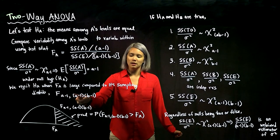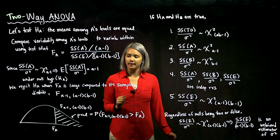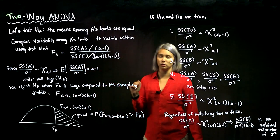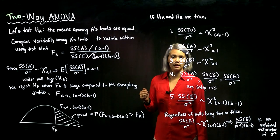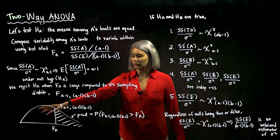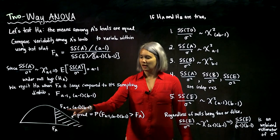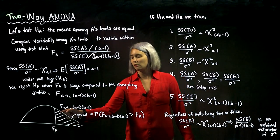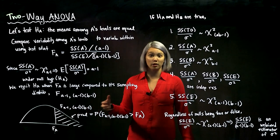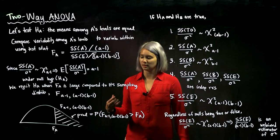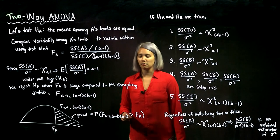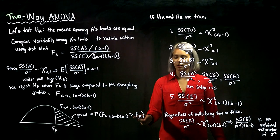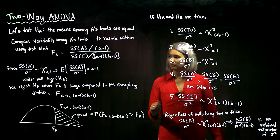We compare this test statistic against an F distribution where df1 is A minus 1 and df2 is (A-1)(B-1). When our test statistic is large compared to this distribution, we reject the null hypothesis that the means among A's different levels are equal. We have our F distribution with those degrees of freedom, we mark off the test statistic, and shade the area to the right — that area is our P-value: the probability that this F distribution exceeds our test statistic.